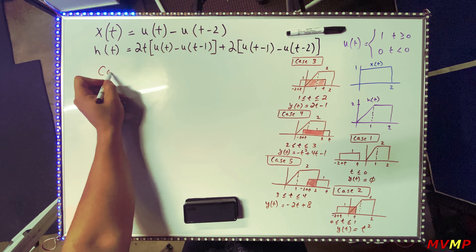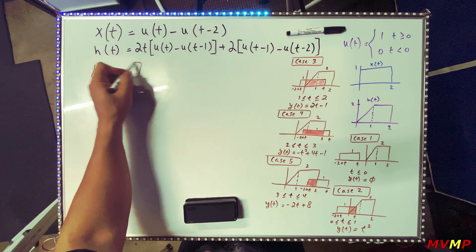Case 6: the leg is now completely outside the impulse response — t ≥ 4 — so there is no longer any overlap. Therefore y(t) = 0 for t ≥ 4.